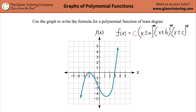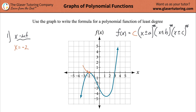The first thing we're going to do is look at the x-intercepts. X-intercepts will help us find the values inside our factors. You go to your graph and locate the x-intercepts — that's where the function touches or crosses the x-axis. So you have an x-intercept at negative 2, so I'll write x equals negative 2. And then you have another x-intercept at positive 3, so you write x equals positive 3.